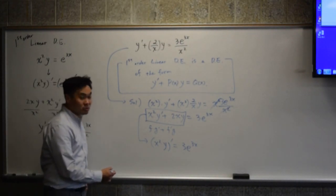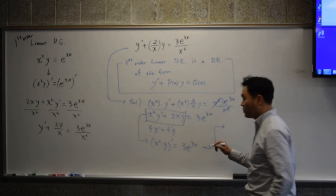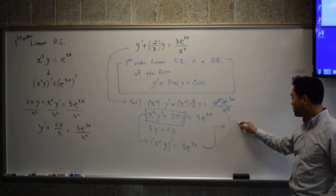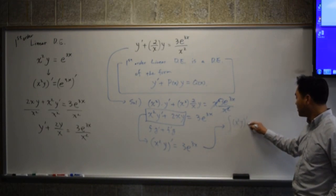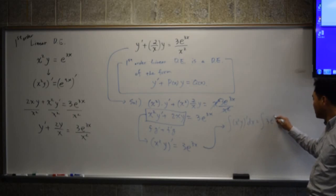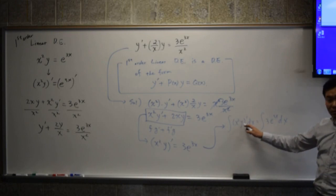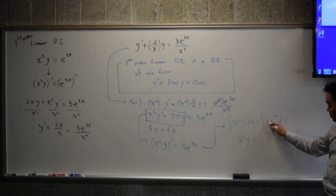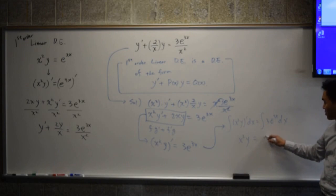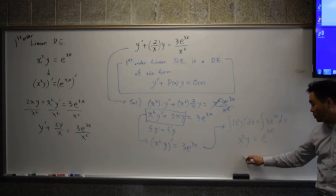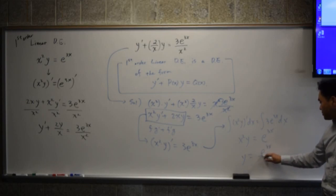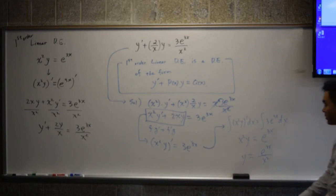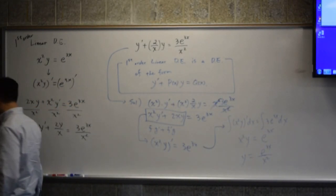And now we are almost done. What do you do in the next step? You integrate both sides. And if you integrate the derivative, you get itself. If you integrate this, it's 1/3 times e to 3x. And finally, if you solve for y, you get y equals e to the 3x over x squared. So this is how you solve the first-order equation.